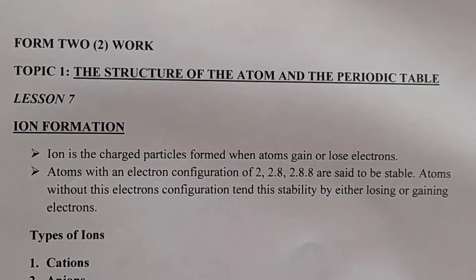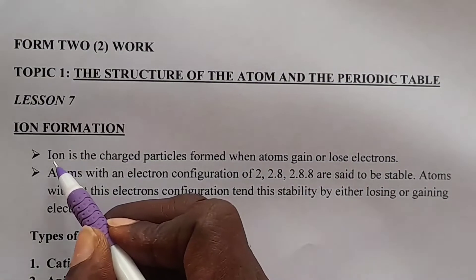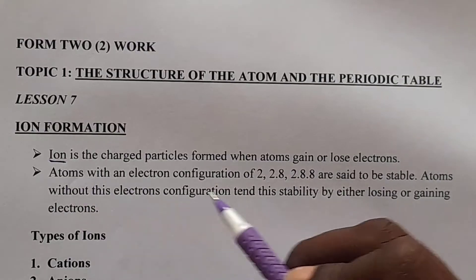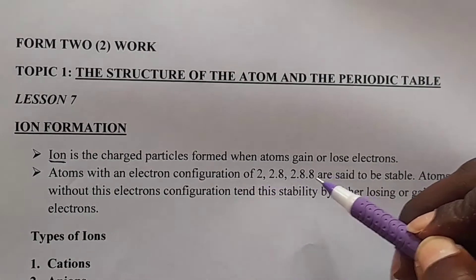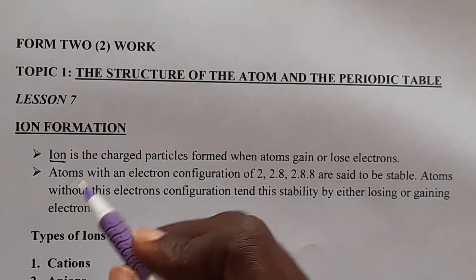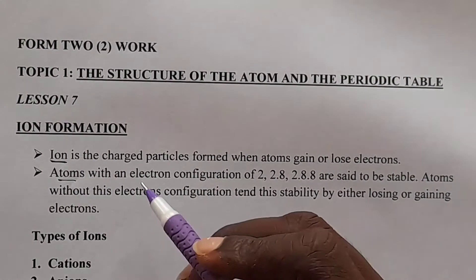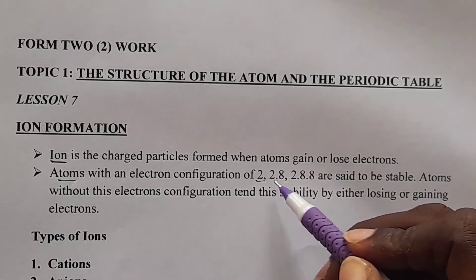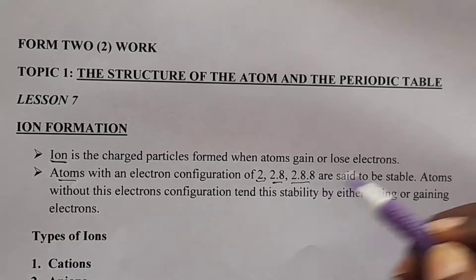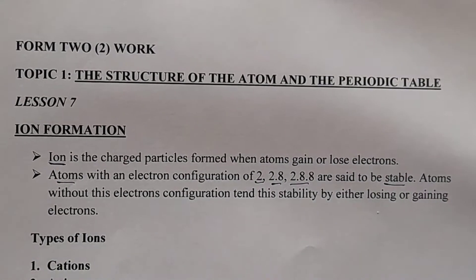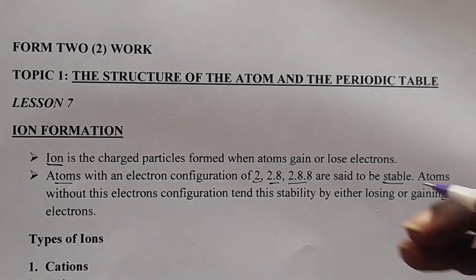So let's start by knowing what an ion is. An ion is the charged particle formed when an atom gains or loses electrons. We are told that atoms with an electron configuration of 2,8 or 2,8,8 are said to be stable. Remember, electron configuration is also known as electron arrangement.